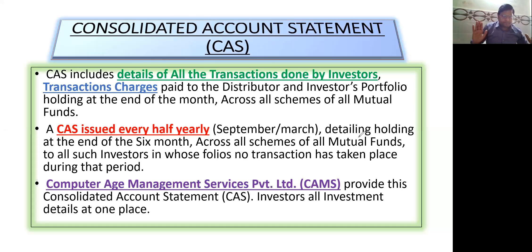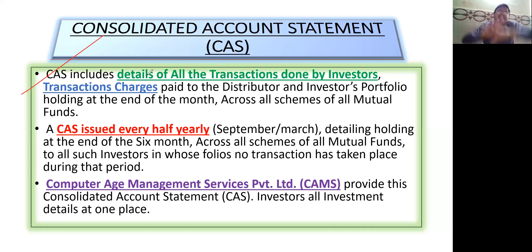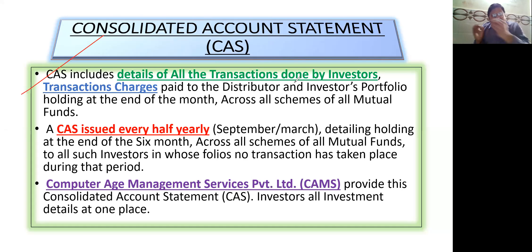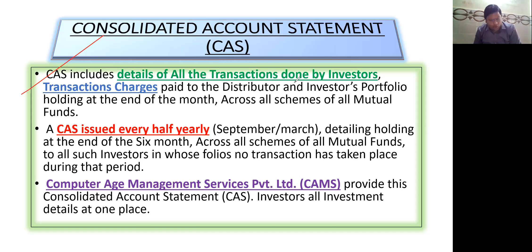Consolidated Account Statement — very important. CAS stands for Consolidated Account Statement. It includes details of all the transactions done by investors and the investor's portfolio holding at the end of the month, across all schemes of all mutual funds. Simple and clear.